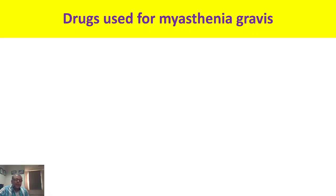Myasthenia gravis is an autoimmune disorder where antibodies are developed against the nicotinic receptor. Because the receptors are reduced, acetylcholine is not able to bind with the receptor and produce its subsequent function — that is, muscle contraction — and that is why there is muscular weakness.